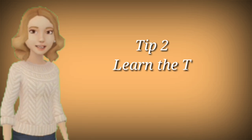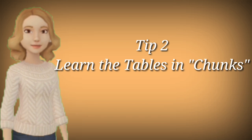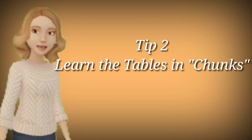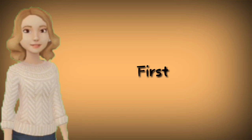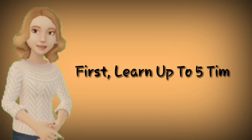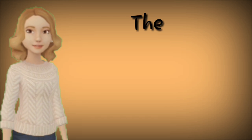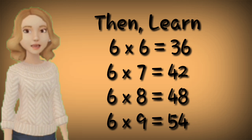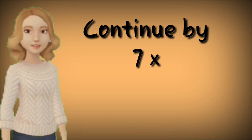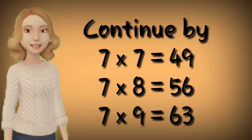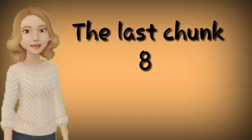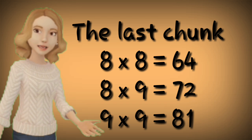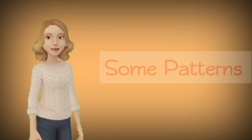Tip number two: learn the tables in chunks. We're going to divide the times table into four chunks. The first is learn up to 5 times 9. The second: learn table 6, starting from 6 times 6 to 6 times 9. The third: continue with 7 times 7, 7 times 8, and 7 times 9. The last chunk is 8 times 8, 8 times 9, and 9 times 9.